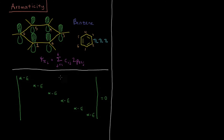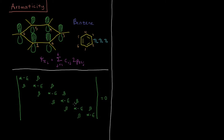Now we need betas wherever we have adjacent atoms. One and two are adjacent, so there's a beta; similarly for two-three, three-four, four-five, and five-six. If it weren't for the extra coupling elements, we would see three independent ethylene sub-determinants going down the diagonal, but we have extra coupling elements between atoms two-three and four-five making it a fully conjugated pi system.